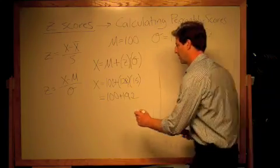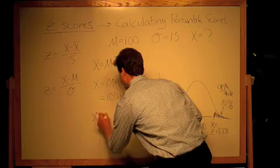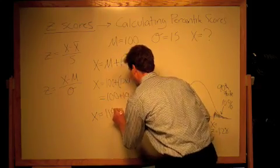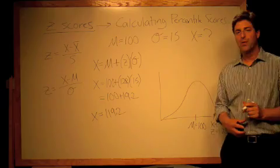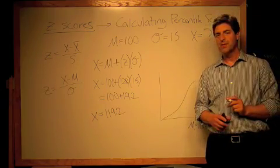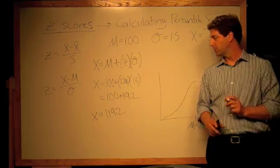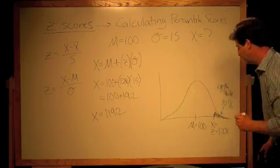And then I just add those together. And then I wrap words around my result. The score that marks the 90th percentile in this distribution is 119.2.